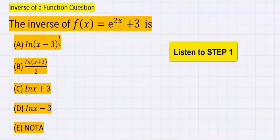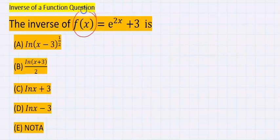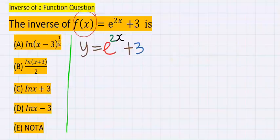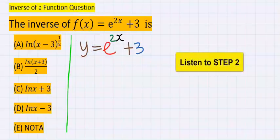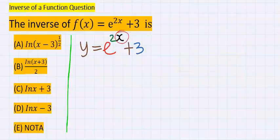Step number one: replace f(x) with y. Hence, instead of f(x), we now have y. Step number two: make x the subject, that is, isolate x. However, as you can see, x is in a difficult position.